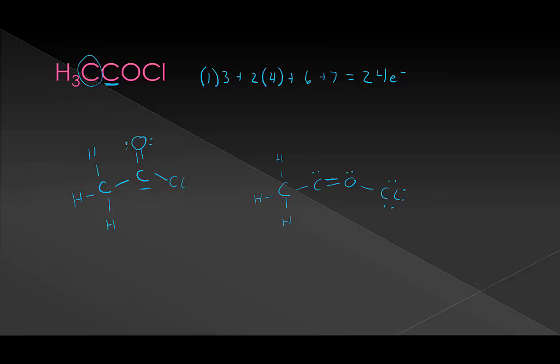This is the first time where we really need to look at our formal charges. So let's go through and do our formal charges for each atom. Let's start with this carbon. It came in with 4 electrons, and now it owns 1 electron from each bond, which gives it 4. So it has a formal charge of 0. Now let's look at this carbon. It came in with 4 valence electrons. It owns 1 electron from each bond. It has a formal charge of 0.